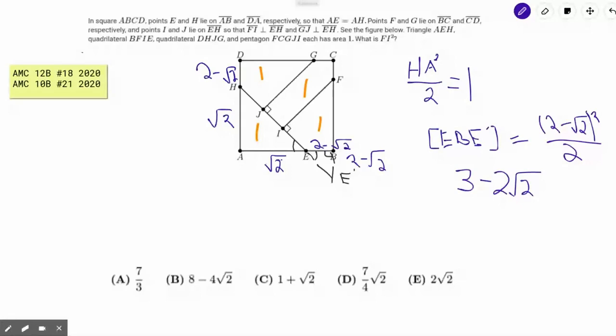So now why is this helpful? Well, we can actually look at a bigger triangle than the one we were considering, and that big triangle is FIE prime. The reason this triangle helps us is because we know its area, which is 1 plus 3 minus 2√2, which equals 4 minus 2√2.